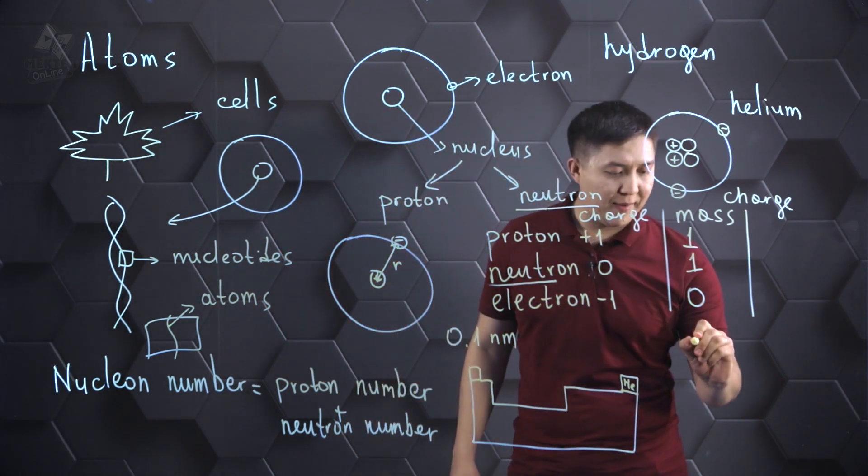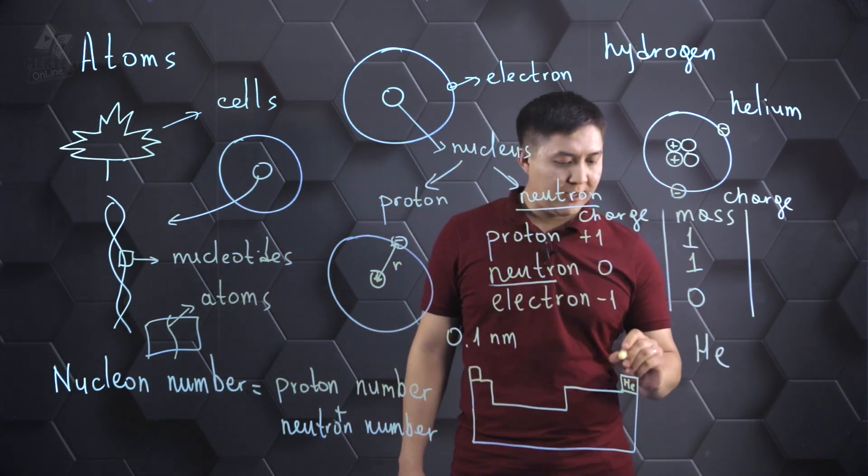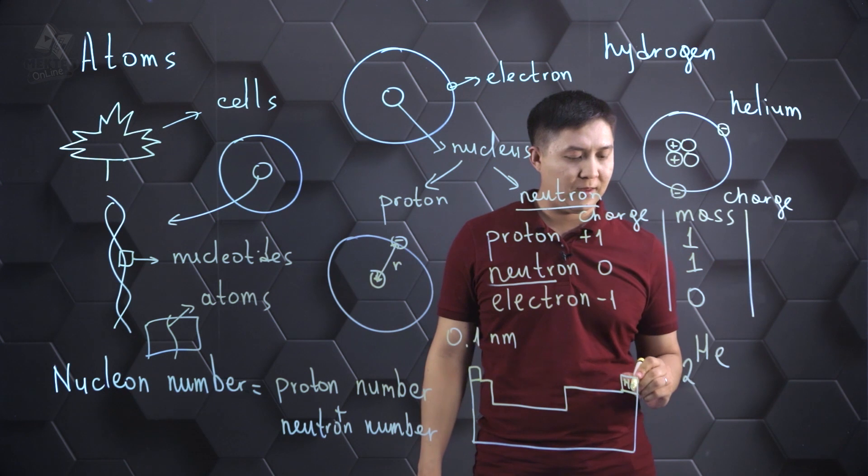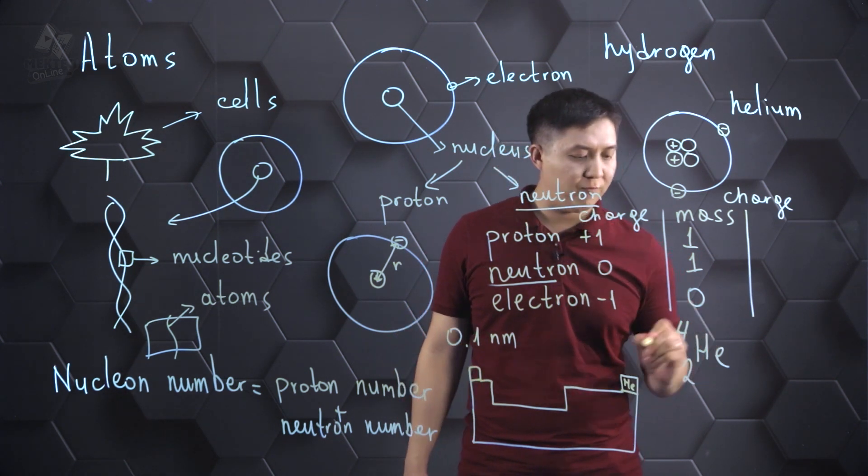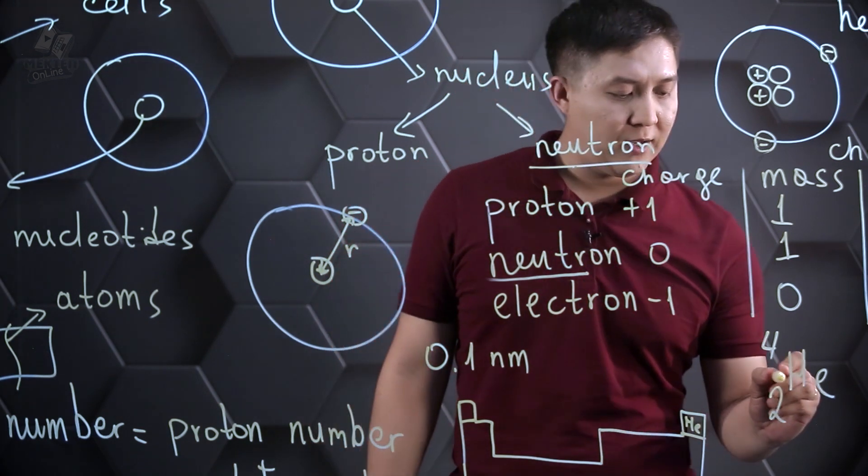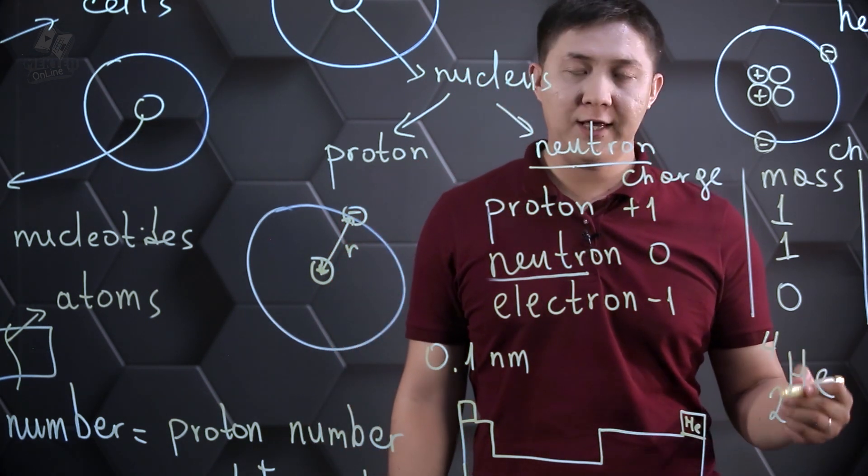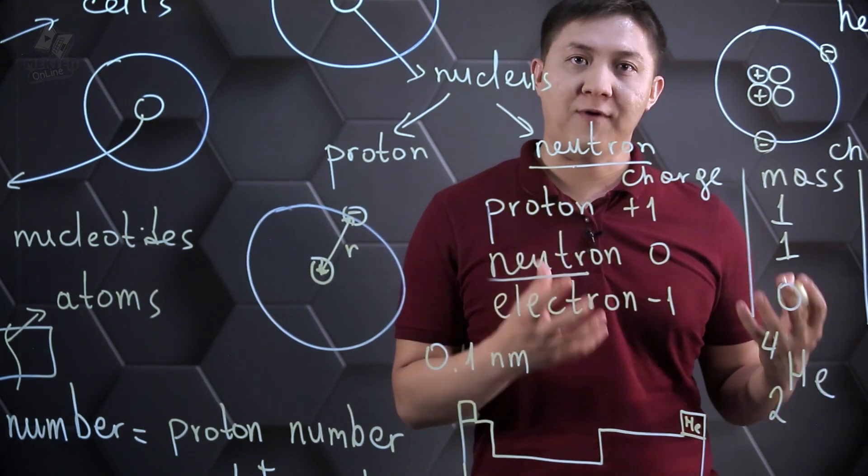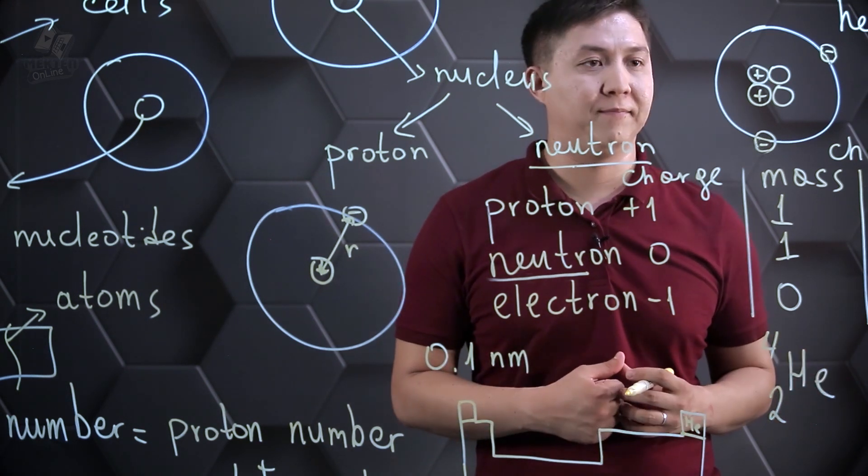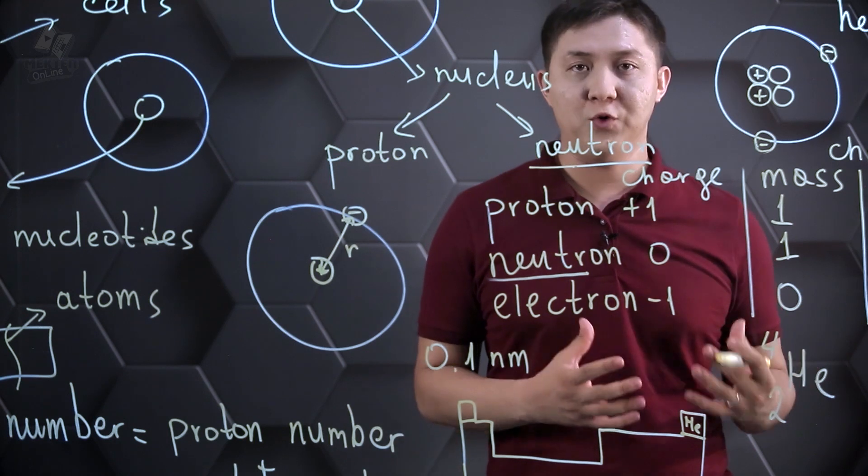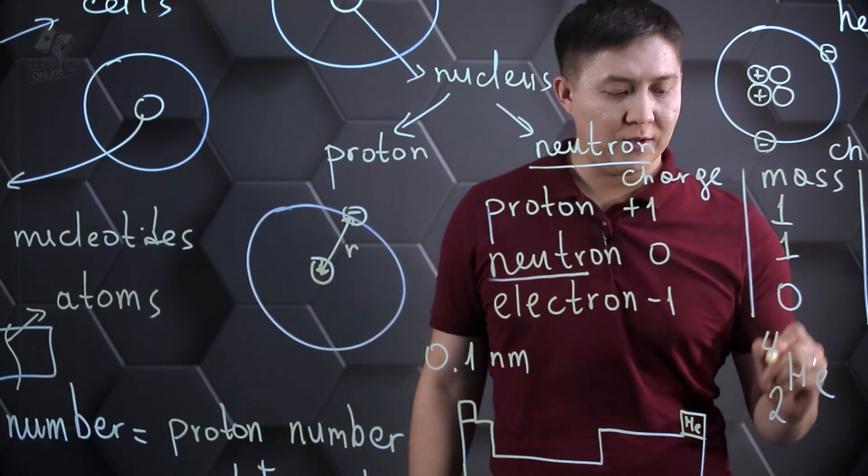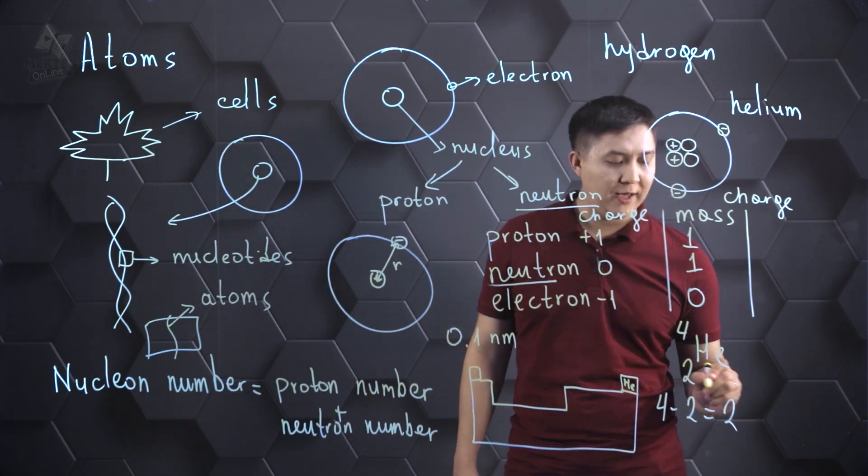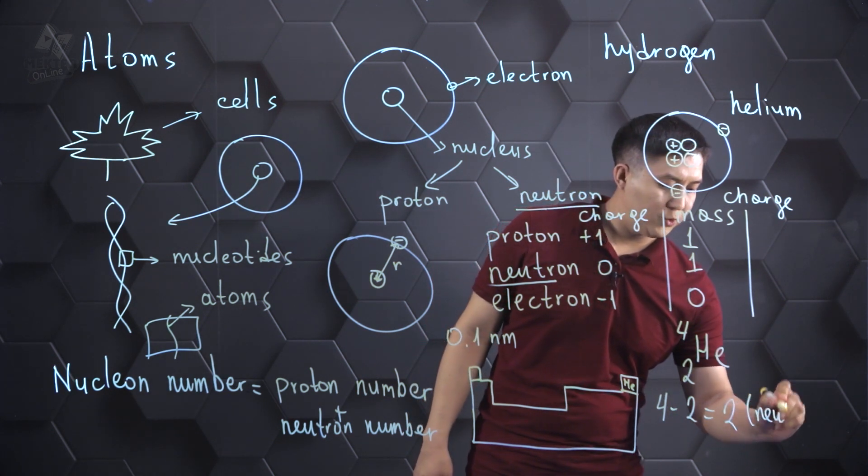Let's take a helium atom. Helium's atomic number is equal to 2. And its nucleon number is equal to 4. So, atomic number tells us that helium has two protons. And how do we find the number of neutron of helium atom? In order to identify the number of neutron, we should subtract proton number from the nucleon number. So, 4 minus 2 is equal to 2. It means that helium has two neutrons.